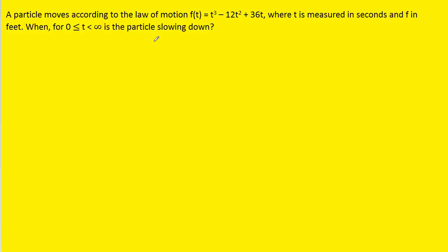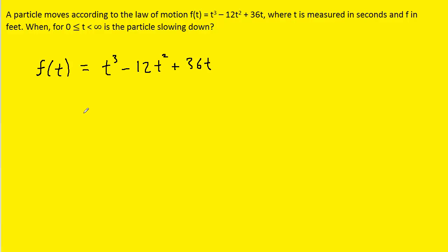What we're going to have to do first is take our position function and transform it into a velocity function. And then after that, transform it into an acceleration function. We'll explain why we do that in just a moment. First, let's write down the position function, and then to change this position function into a velocity function, we calculate its derivative.